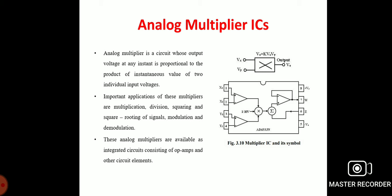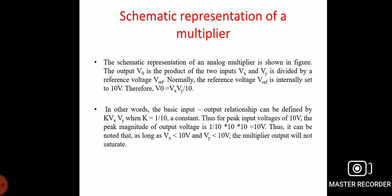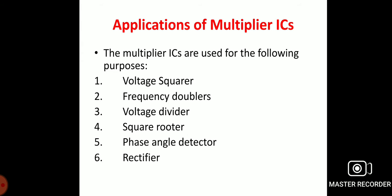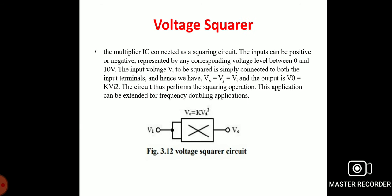The applications of the analog multiplier IC using an operational amplifier include: (1) voltage squarer, (2) frequency doubler, (3) voltage divider, (4) square router, (5) phase angle detector, and (6) rectifier.